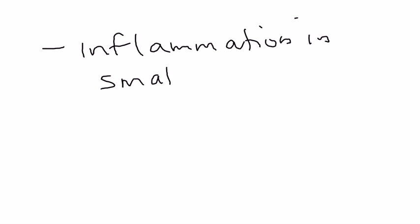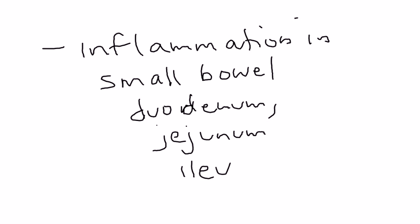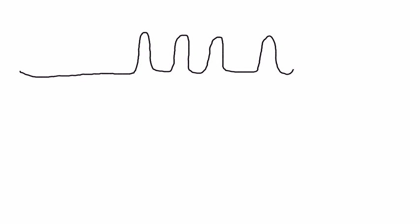That reaction causes inflammation in the small bowel. The small bowel is your duodenum, jejunum, and ileum. That inflammation eventually causes the mucosa to atrophy. To illustrate this, normally the lining of the mucosa of the bowel looks like this.